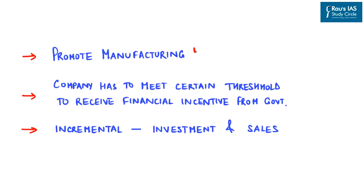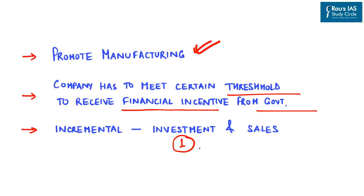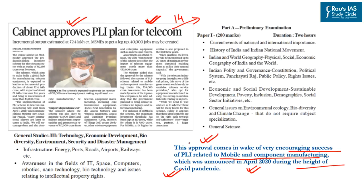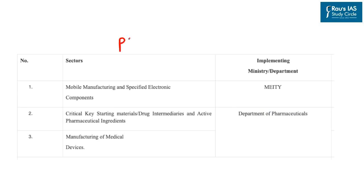Overall, the PLI scheme promotes manufacturing in India. Under the scheme, a company must meet certain thresholds to receive financial incentives from the government — specifically successive increases in investment in India over a period of years, and successive increases in sales of products manufactured in India. The scheme was originally available for three sectors: mobile manufacturing and specified electronic components; critical key starting materials, drug intermediaries and active pharmaceutical ingredients; and manufacturing of medical devices.